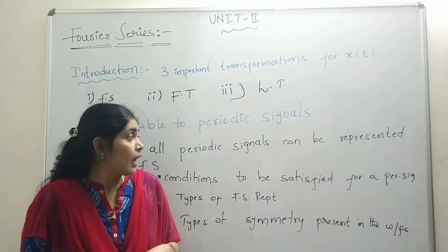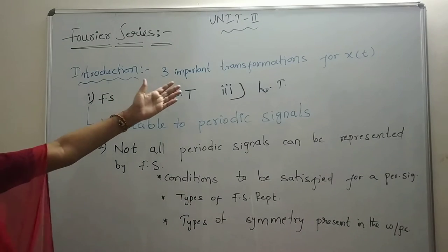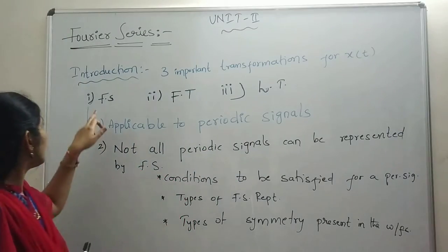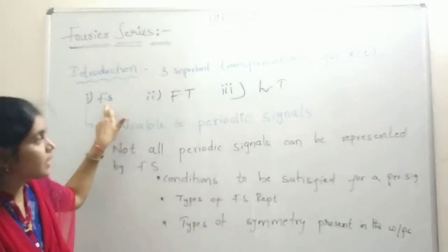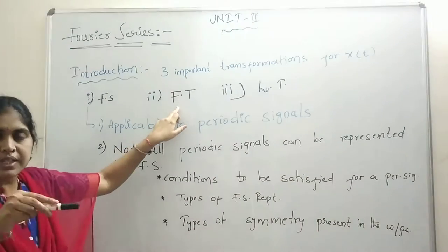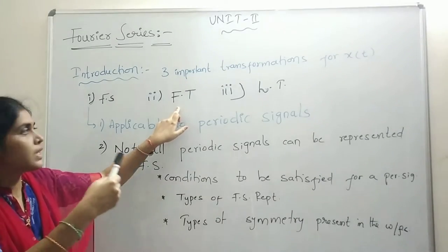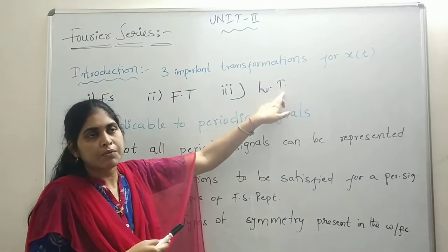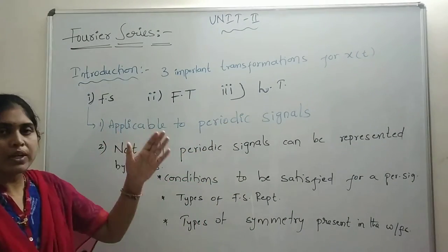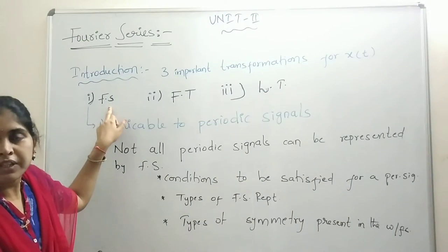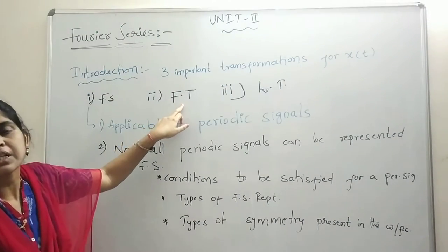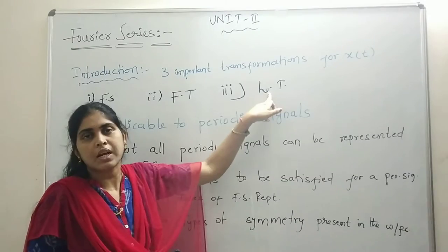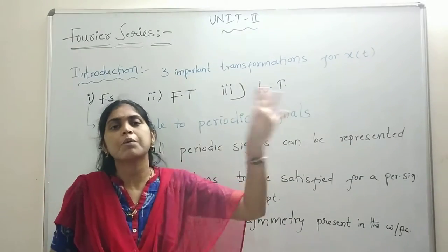There are three important transformations for continuous time signal x(t). The first one is Fourier series, the second is Fourier transform, and after Fourier transform there is Laplace transform. Whenever we go step by step, some disadvantage will be there with the Fourier series — that is the reason we go for Fourier transform. Some disadvantage will be there with Fourier transform, and to overcome that we go for Laplace transform. So advanced transforms are defined in this progression.